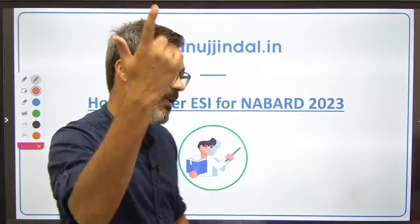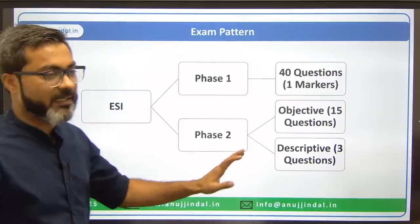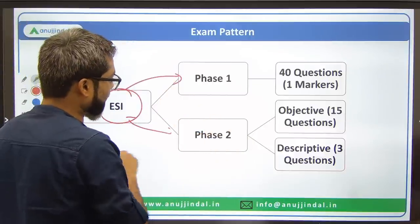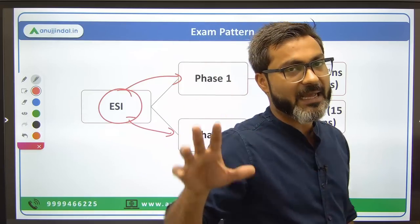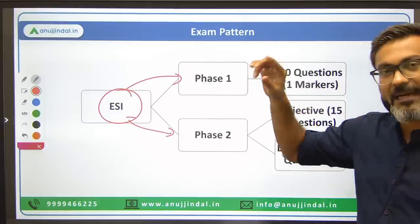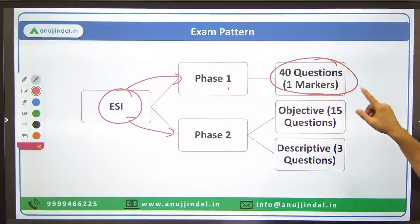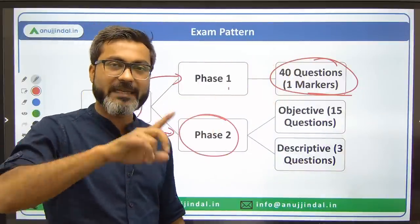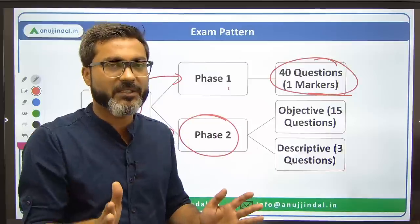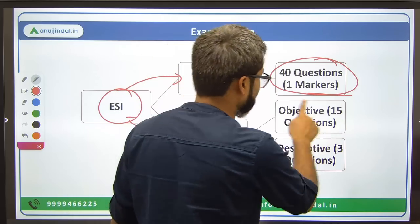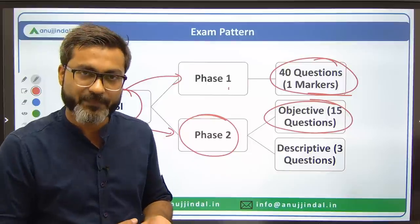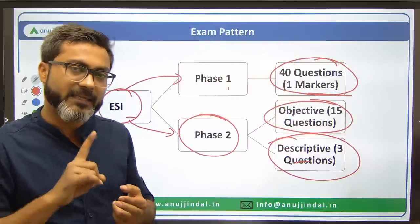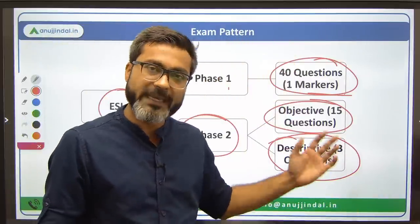Let me tell you the exam pattern. ESI is asked in both phase one and phase two, unlike RBI where ESI is asked only in phase two. In NABARD, it is asked in both phases. In phase one there are 40 questions of one mark each. In phase two there is one combined ESI and ARD paper with 30 questions total — 15 questions consisting of both two-mark and one-mark questions. In descriptive also there is one common paper of ESI and ARD with six questions, three belonging to ESI and three to ARD.